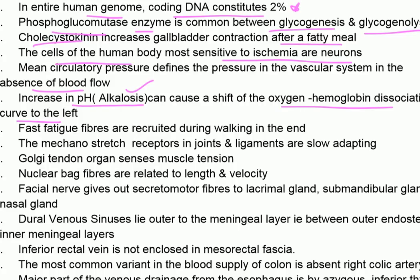Left shift of the oxygen-hemoglobin dissociation curve is due to increased pH. Other causes include decrease in temperature, decrease in 2,3-DPG, decrease in H+ ions, and carbon monoxide also shifts the curve to the left.